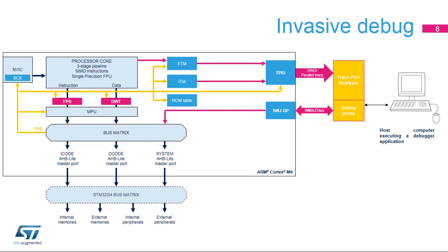Invasive debug halts the processor when a debug event occurs. Two units are involved in invasive debug: the flash patch and breakpoint, or FPB, and the data watchpoint and trace, or DWT.